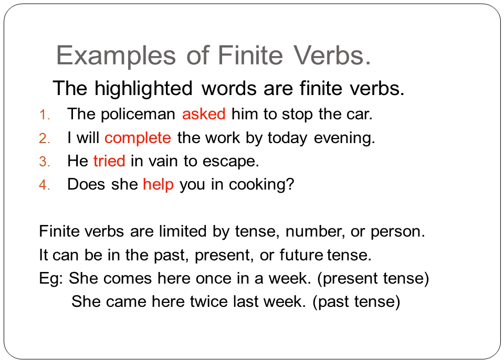A finite verb can be in the past tense, present, or future tense. For example: 'She comes here once a week' — 'comes' is a verb in the present tense. Second: 'She came here twice last week' — 'came' is the past tense form.